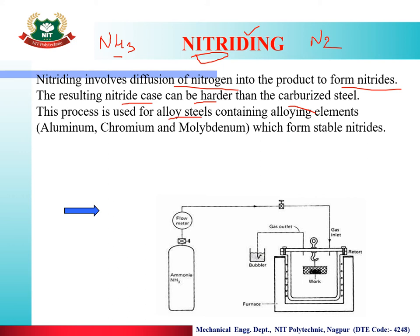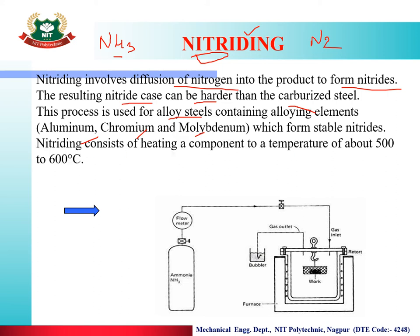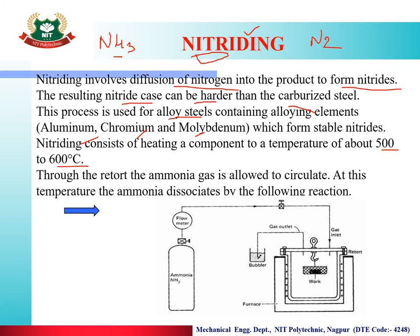Nitriding consists of heating a component to a temperature of about 500 to 600 degrees centigrade. Through the retort, ammonia gas is allowed to circulate. At this temperature, the ammonia dissociates by the following reaction: 2NH3 dissociates to give 2 nitrogen and 3 hydrogen atoms. This nitrogen diffuses into the steel component layer and forms nitrides, which are very hard, giving a hard surface layer.